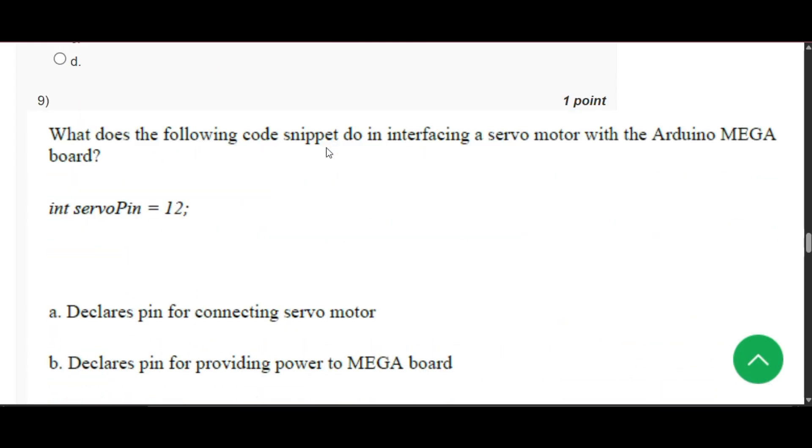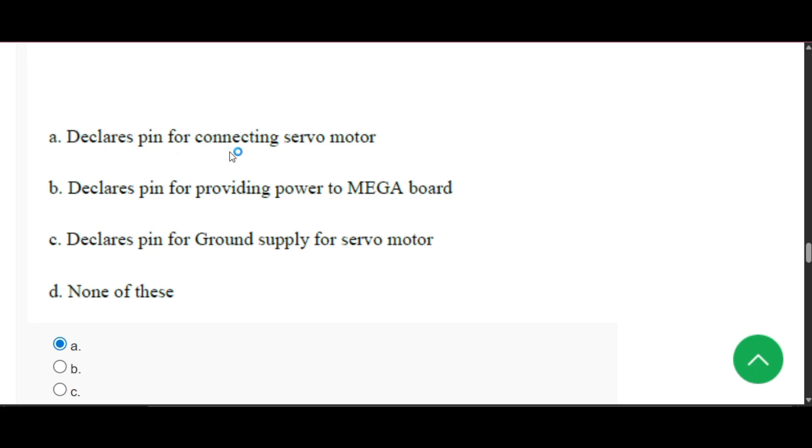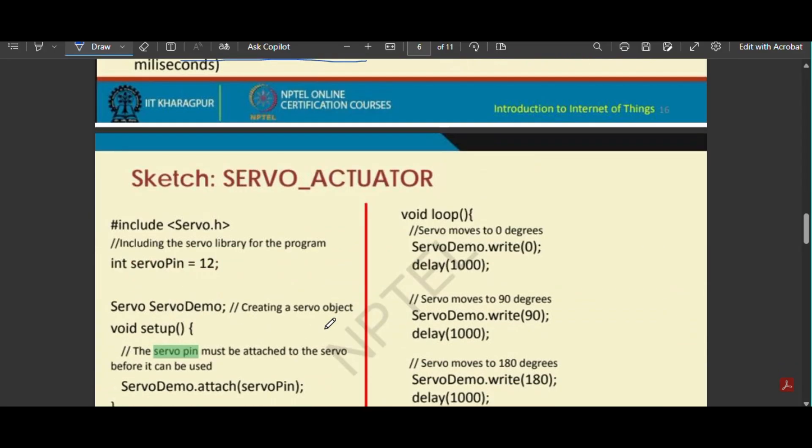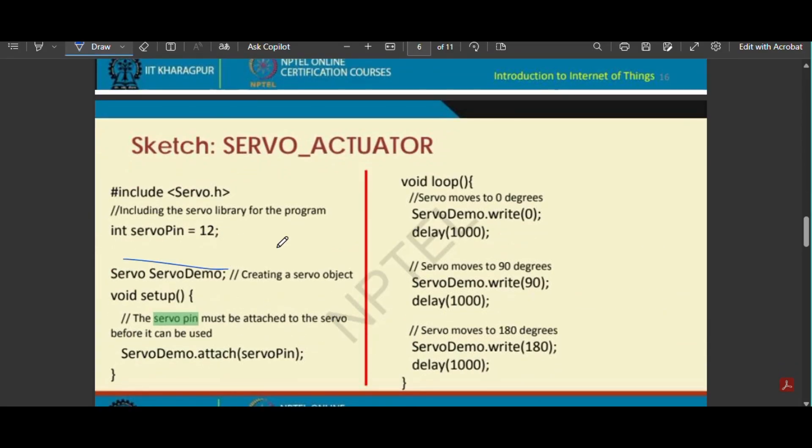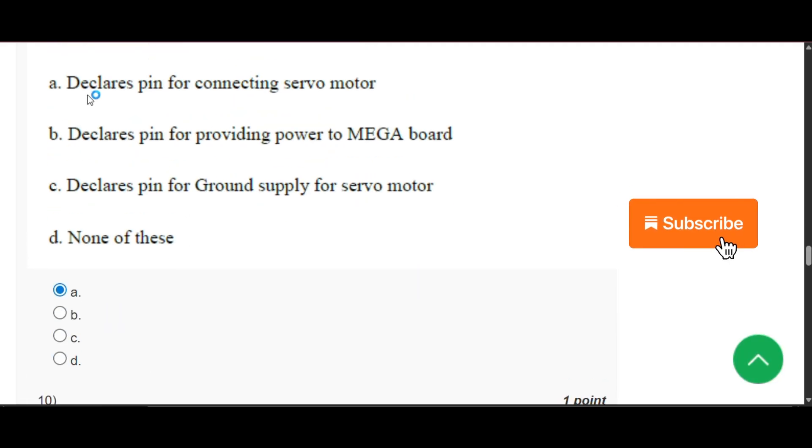Now question number 9: What does the following code snippet do in interfacing a servo motor with the Arduino Mega board? Int servo pin 12. So the answer will be option A, that is declares the pin for connecting servo motor. Here you will see that int servo pin, it is used for connecting the servo motor. Now it declares the pin.